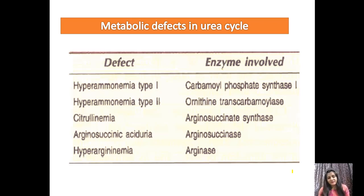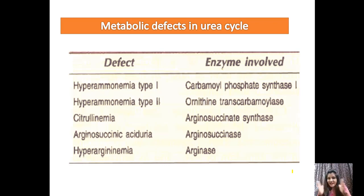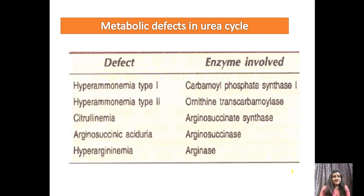Hyperammonemia type 1: there is an increased ammonia level in the blood. This happens because the first step requires carbamoyl phosphate synthetase — when this enzyme is absent, ammonia cannot be converted to carbamoyl phosphate, so ammonia accumulates. Hyperammonemia type 2 is caused by deficiency of ornithine transcarbamylase.